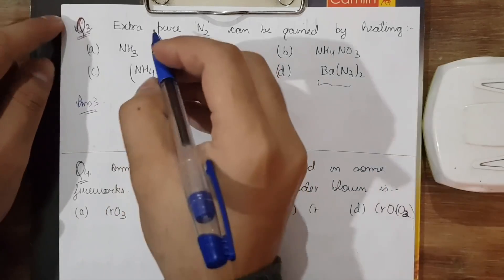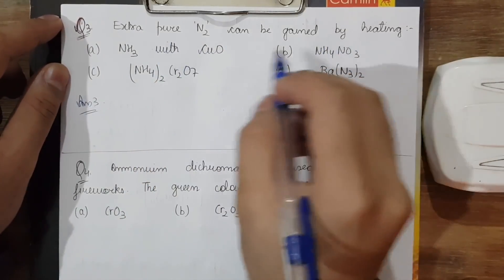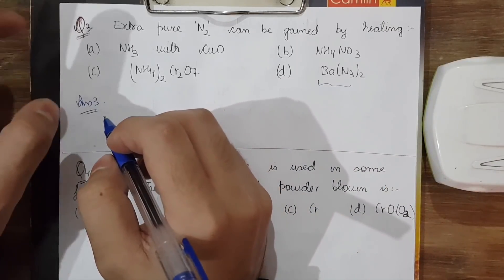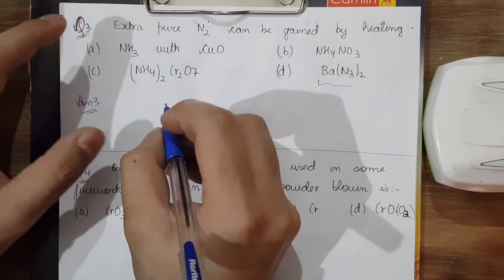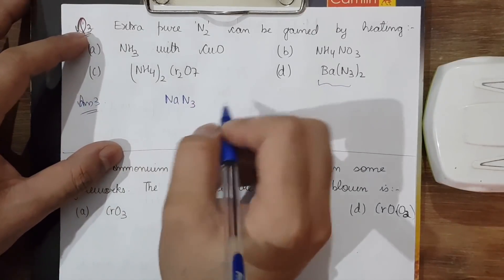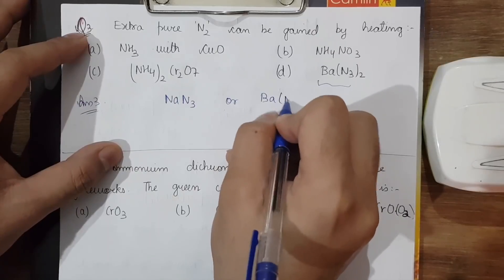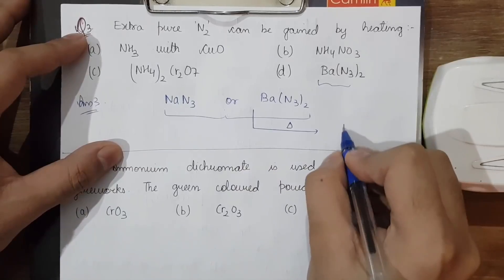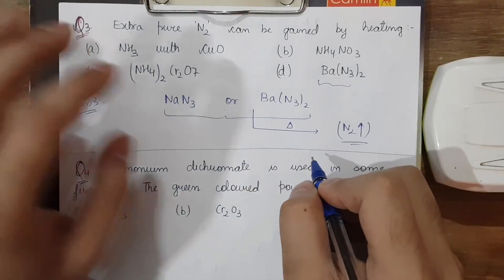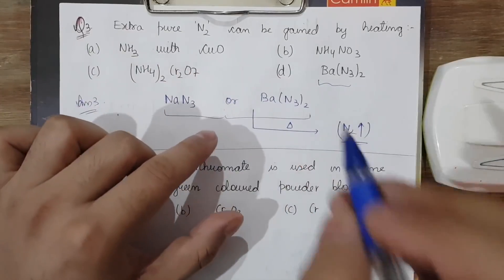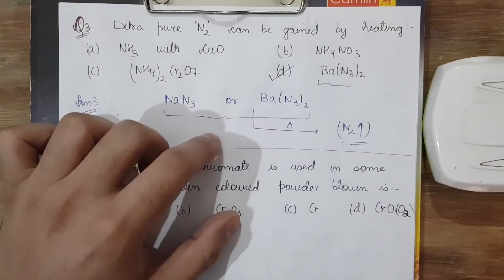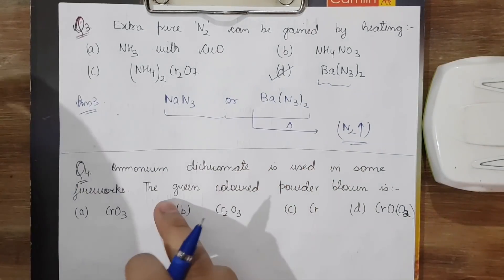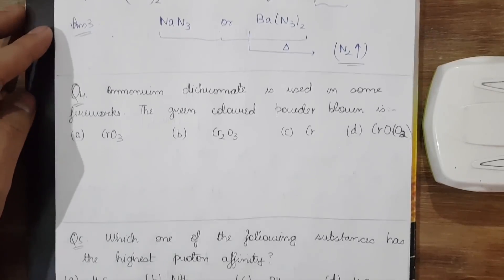The third question: extra pure nitrogen can be obtained by heating which compound? As clearly mentioned in the NCERT, sodium azide or barium azide on heating give pure nitrogen. Therefore option D is the correct answer, as it gives extra pure nitrogen on thermal decomposition.